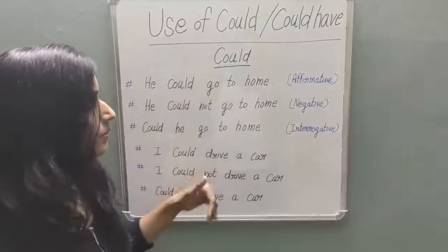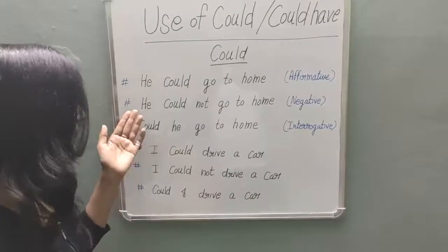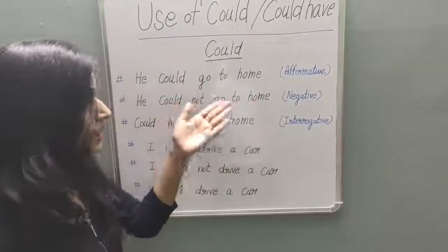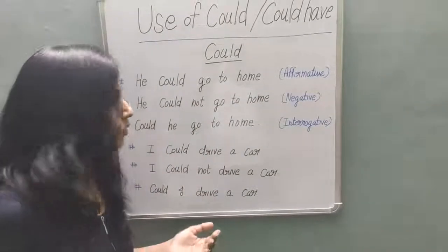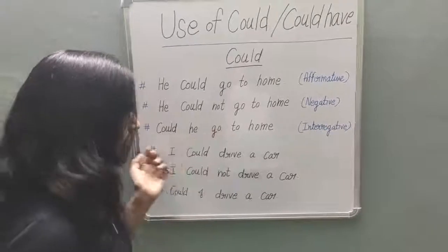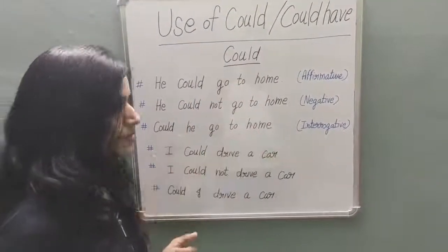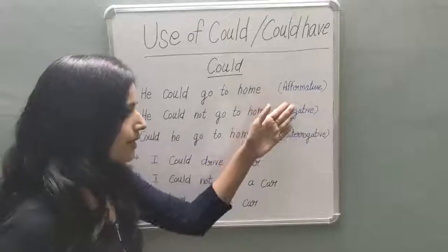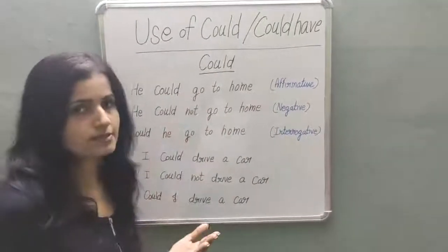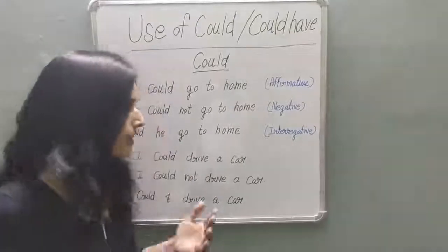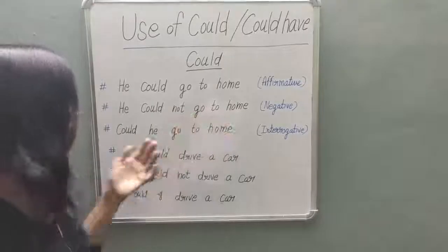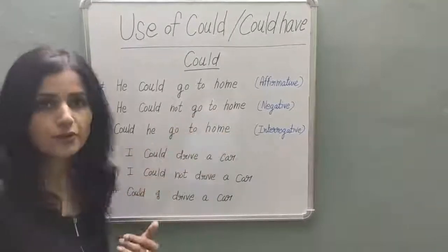For the negative form, we say: 'He could not go home.' And for the interrogative form, if you ask a question: 'Could he go home?' So we can use 'could' in three forms — affirmative: 'He could go home', negative: 'He could not go home', interrogative: 'Could he go home?'